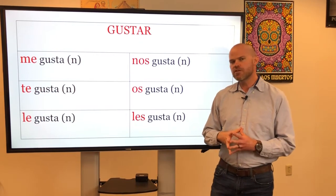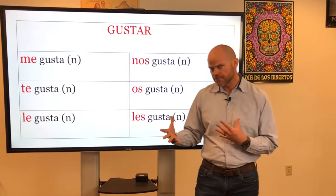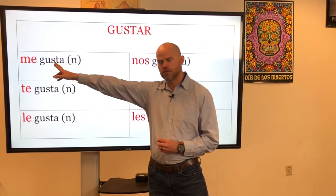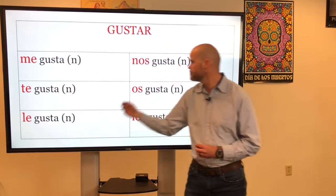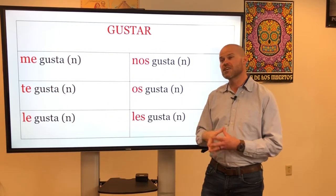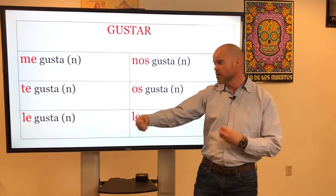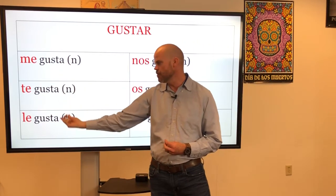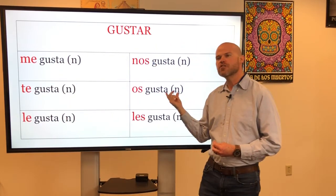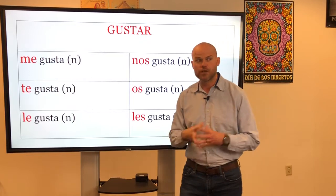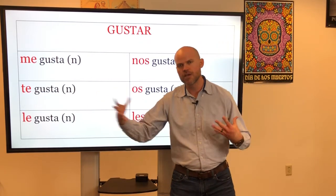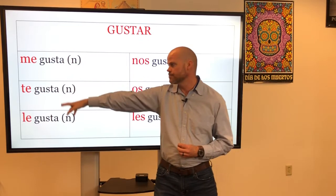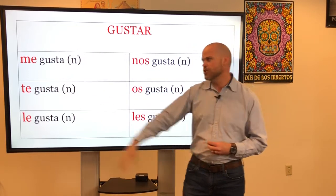Whenever the thing that you like is singular, we use the singular form, gusta. Whenever the thing that you like is plural, we use the plural form, gustan. So when you're using this structure, think about what it is that you like — or he likes, she likes, we like, they like. If it's singular, it's going to be gusta. If it's plural, it's going to be gustan. Muy bien.